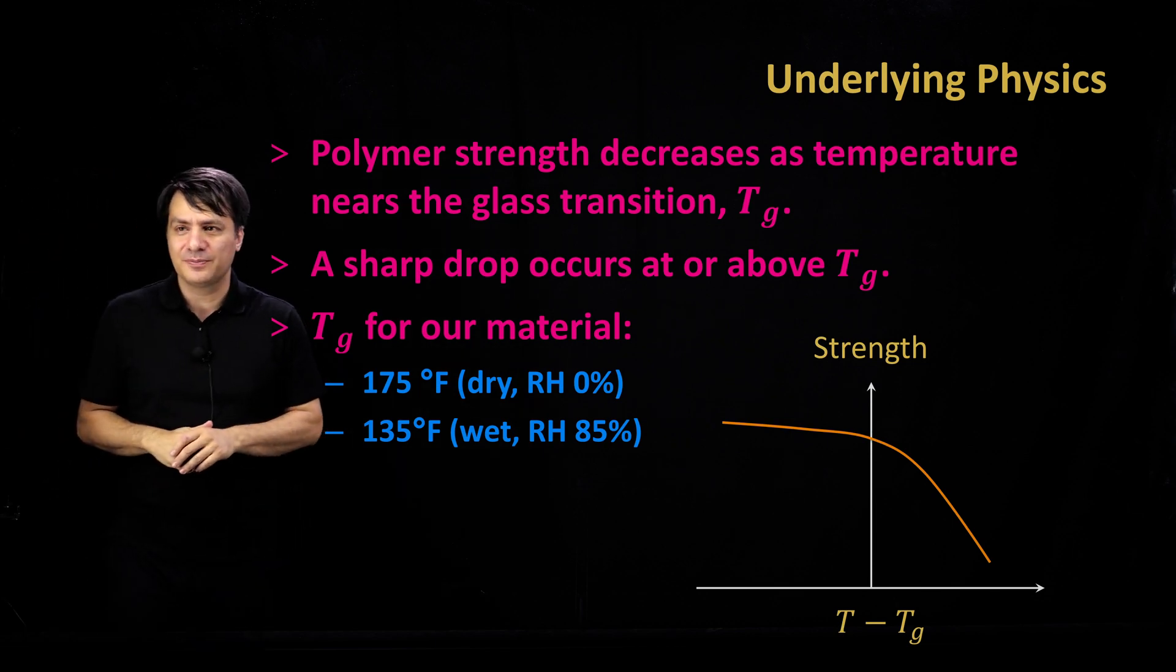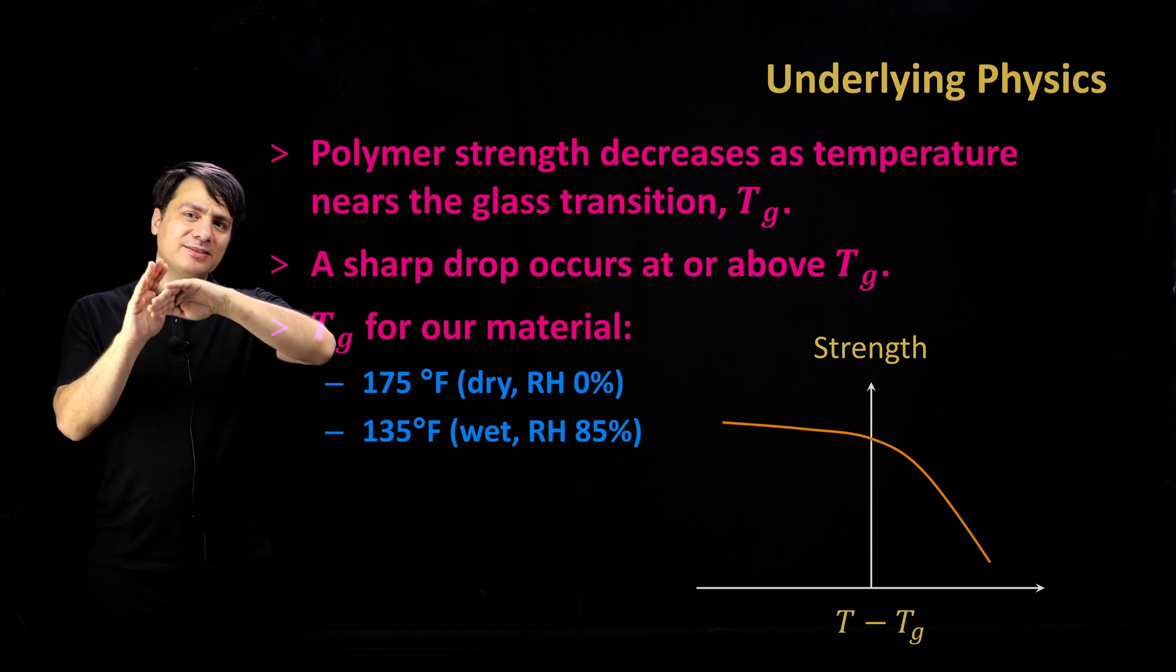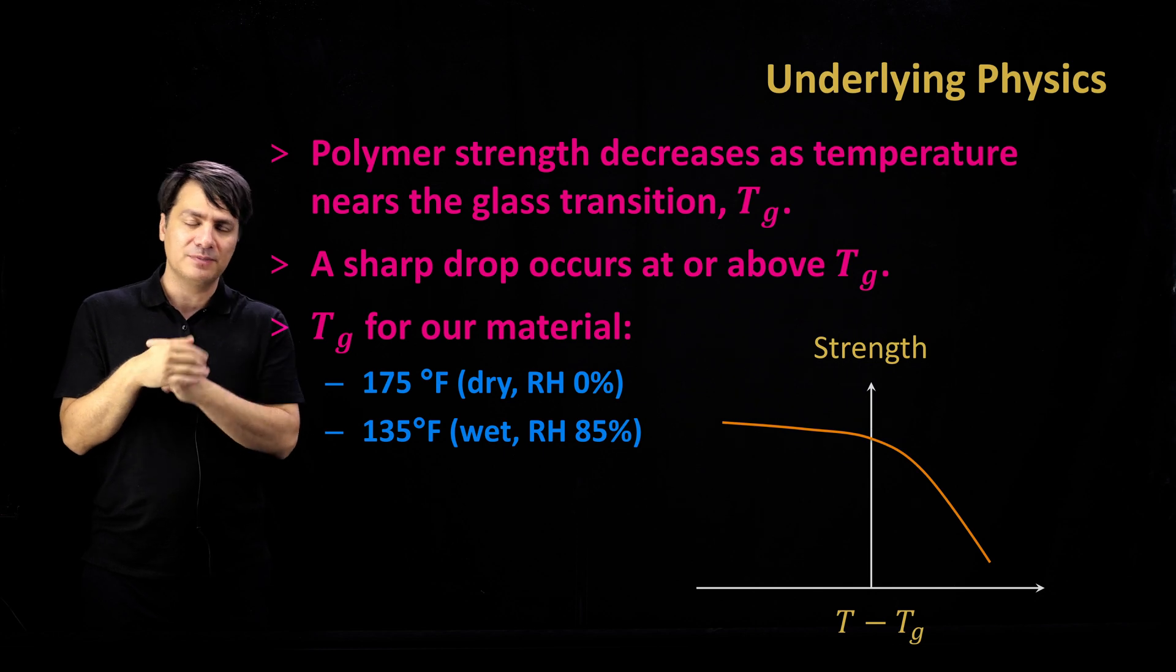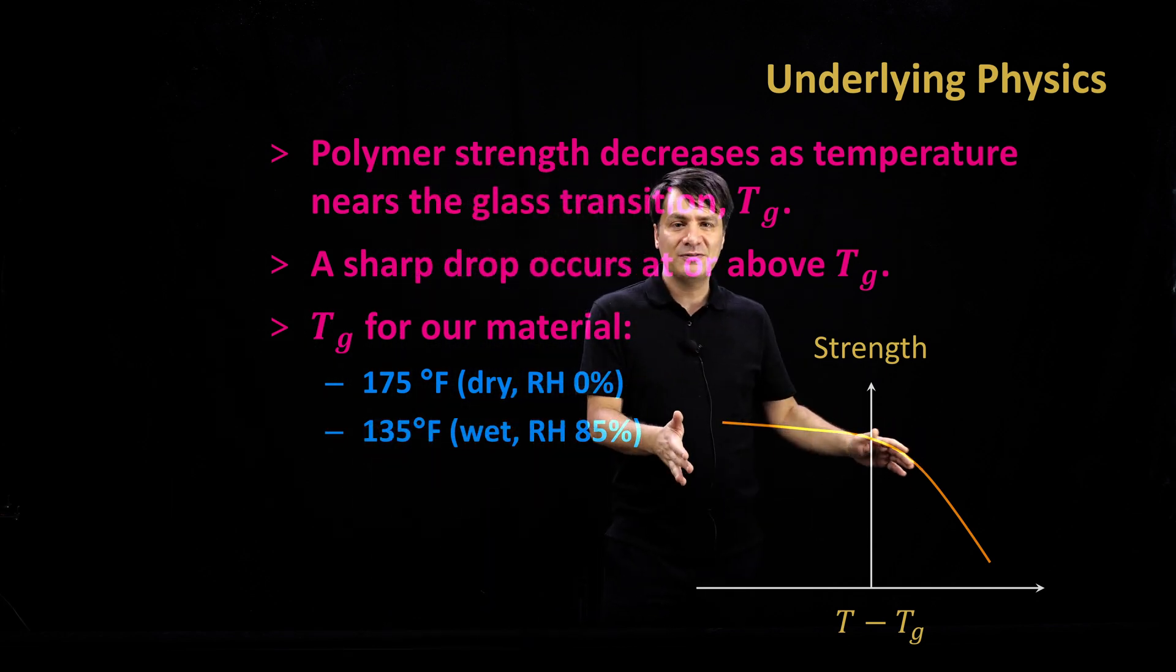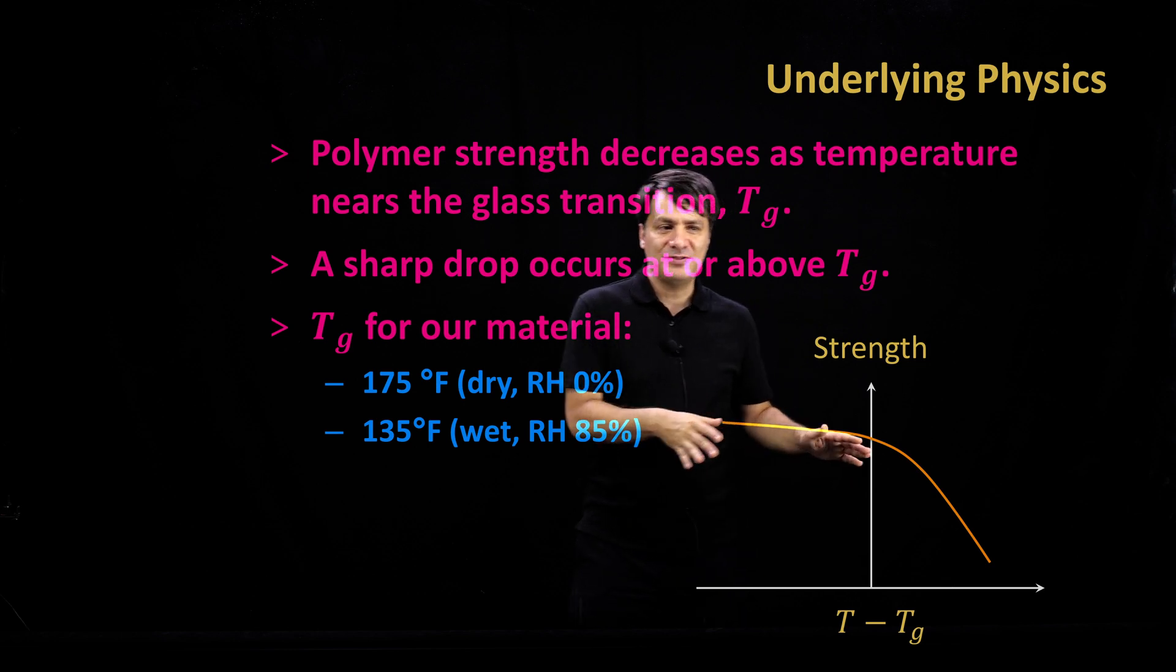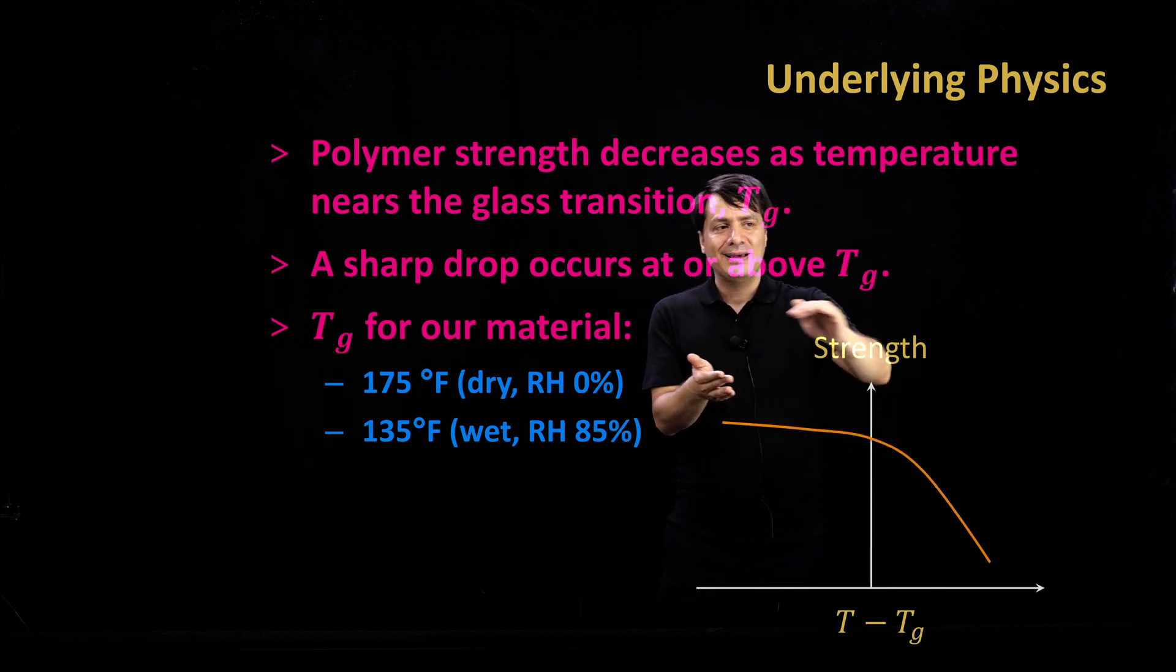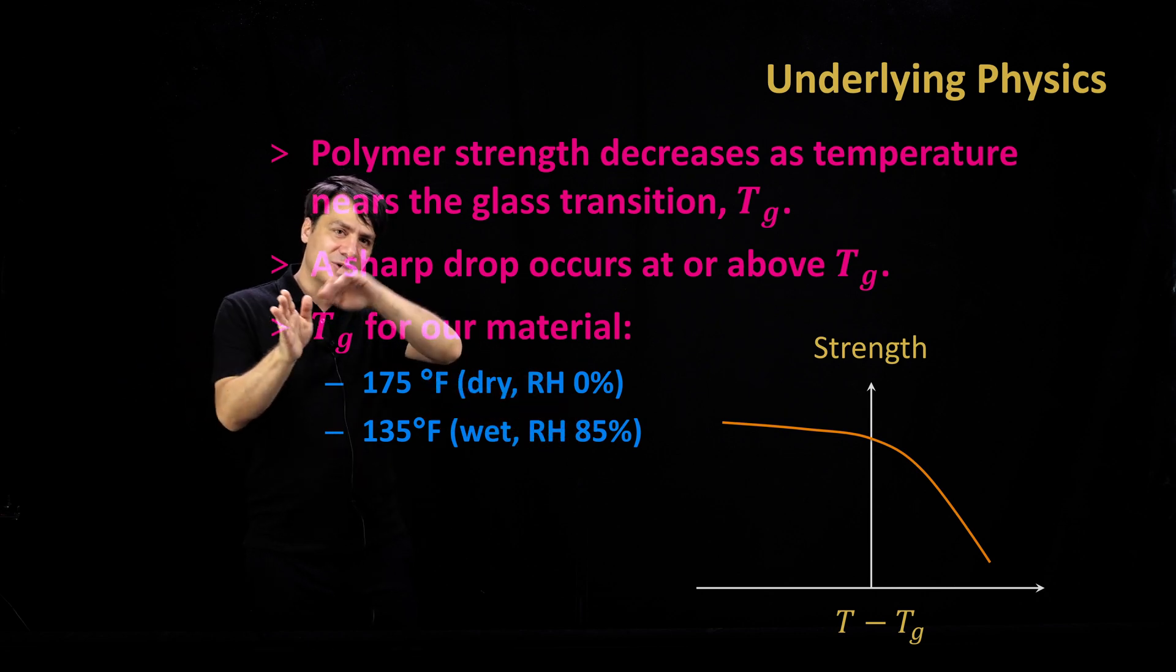Now, let's bring physics into this. I mentioned that when you start heating up polymers, at some point they start becoming softer and softer when they hit a specific temperature called glass transition temperature, which is a function of many parameters, including humidity. Not only the material becomes softer, its strength drops. You can think about it like a high-level curve like this. If you plot strength as a function of T minus Tg, if T is less than Tg, the strength doesn't change. But if T approaches Tg and goes beyond Tg, all of a sudden the strength drops significantly.